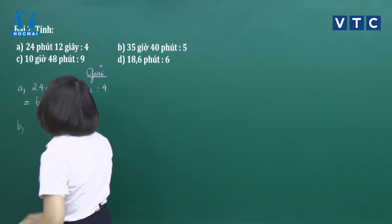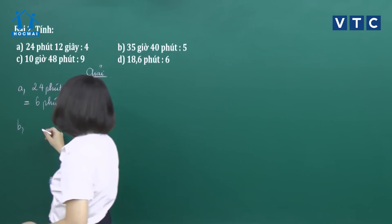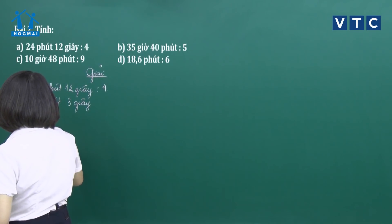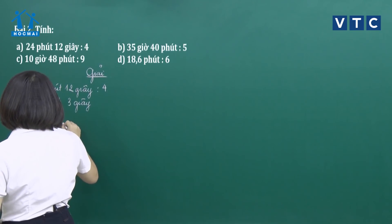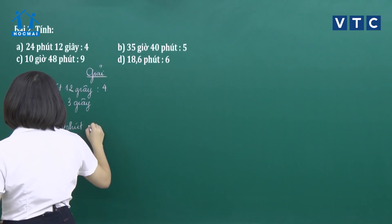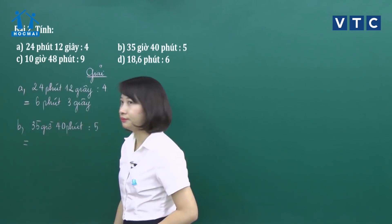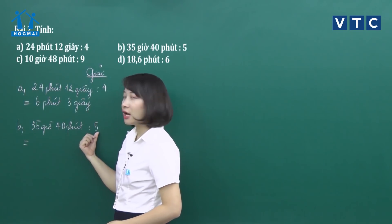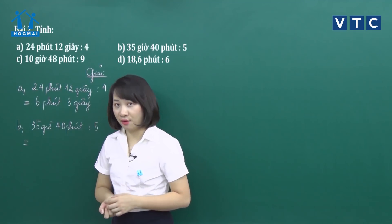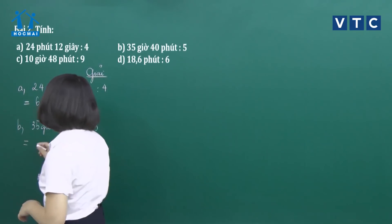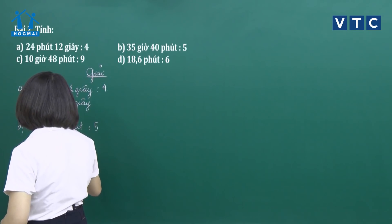Câu B: 35 giờ 40 phút chia cho 5. 35 giờ chia hết cho 5 và 40 phút cũng chia hết cho 5, vậy với đơn vị đo này chúng ta không cần đổi. Lấy 35 chia 5 được 7 giờ, 40 phút chia 5 được 8 phút. Kết quả: 7 giờ 8 phút.